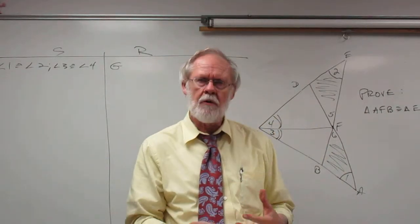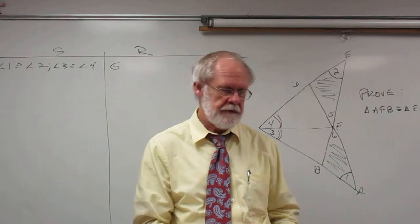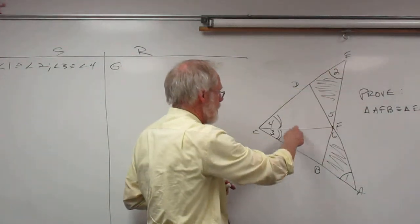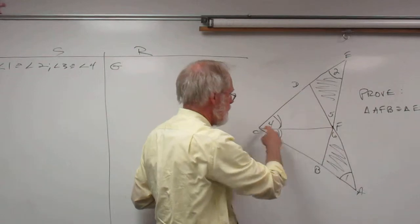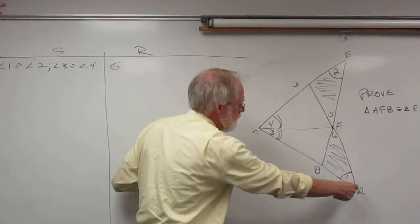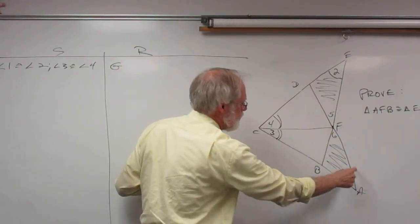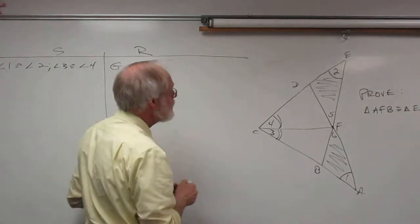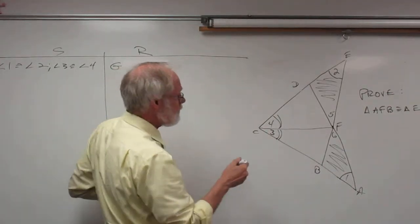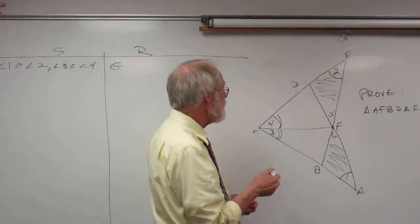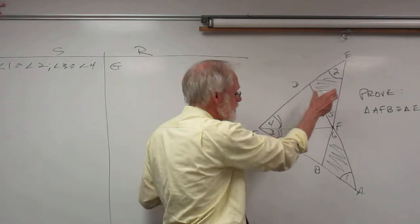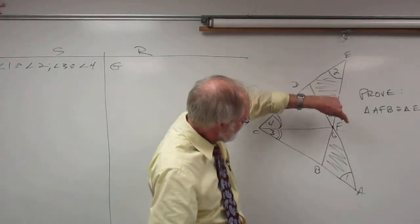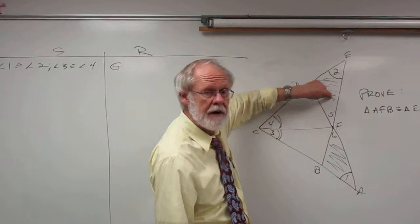What we're going to do is prove these large triangles — this one and this one over here — congruent. When we do, we'll then be able to take a piece of each of those large triangles that is also a piece of the two smaller triangles we're trying to prove congruent.